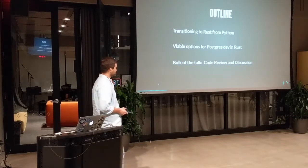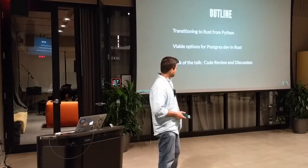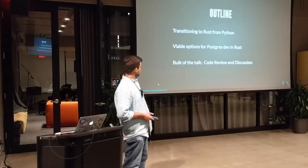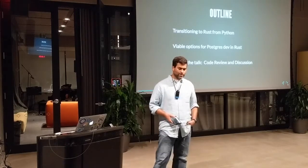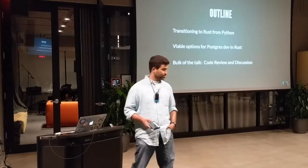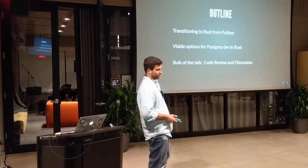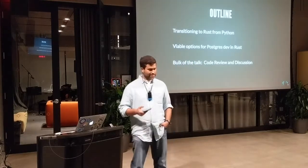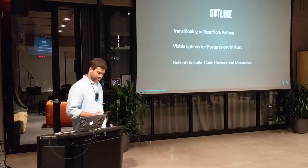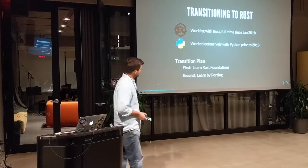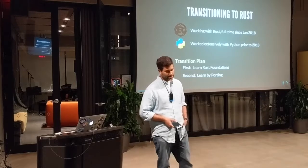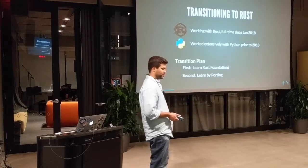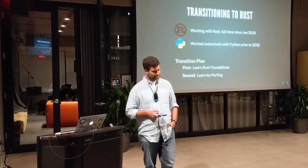The outline for today: first I'm going to talk a little bit about transitioning to Rust from Python. I've been working primarily with Python for several years on the platform. Then I'll talk about what the viable options are today for database development. And for the remainder of the talk I'm going to share a couple of code snippets showing some of the patterns you would use in database development with this library. I began working full-time with Rust in January this year, so that's been about nine full months of just Rust.